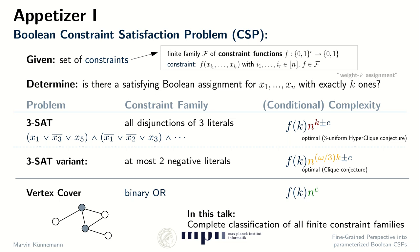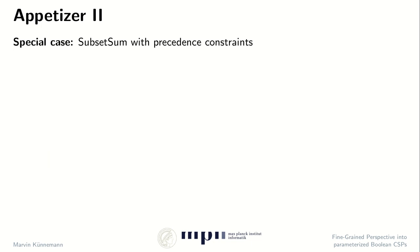So in this talk, we will see a complete classification of all finite constraint families. In particular, during this classification, the following special case will pop up quite naturally: it's a version of the subset sum problem where we have precedence constraints.